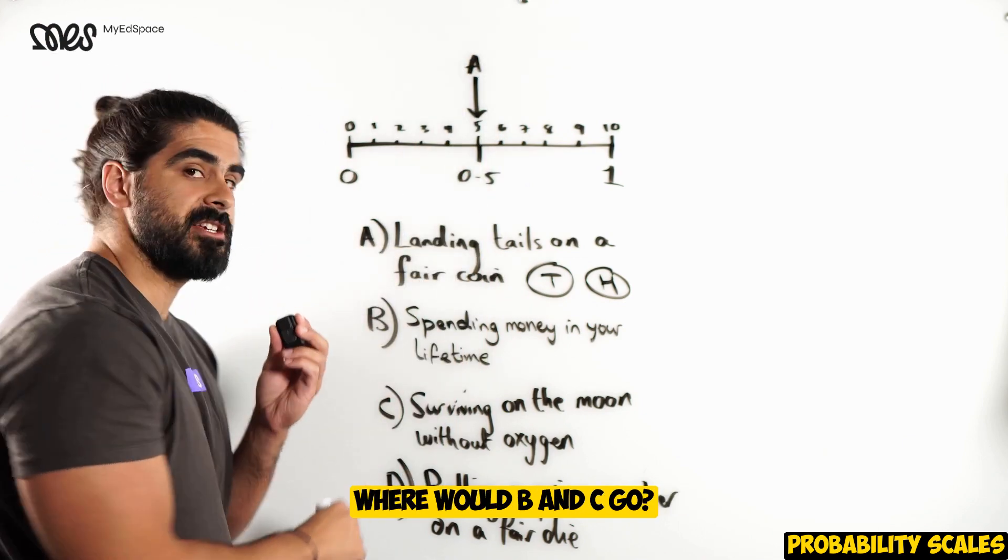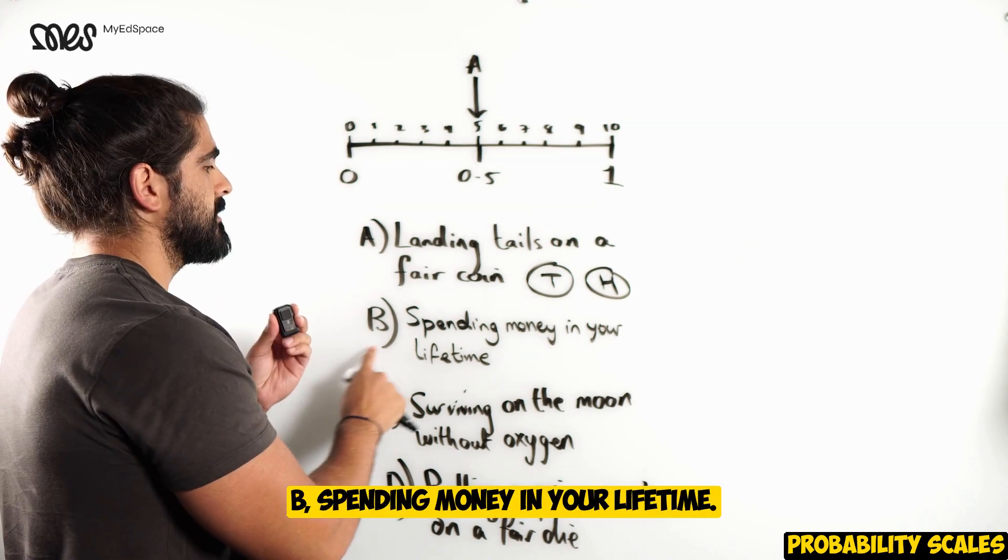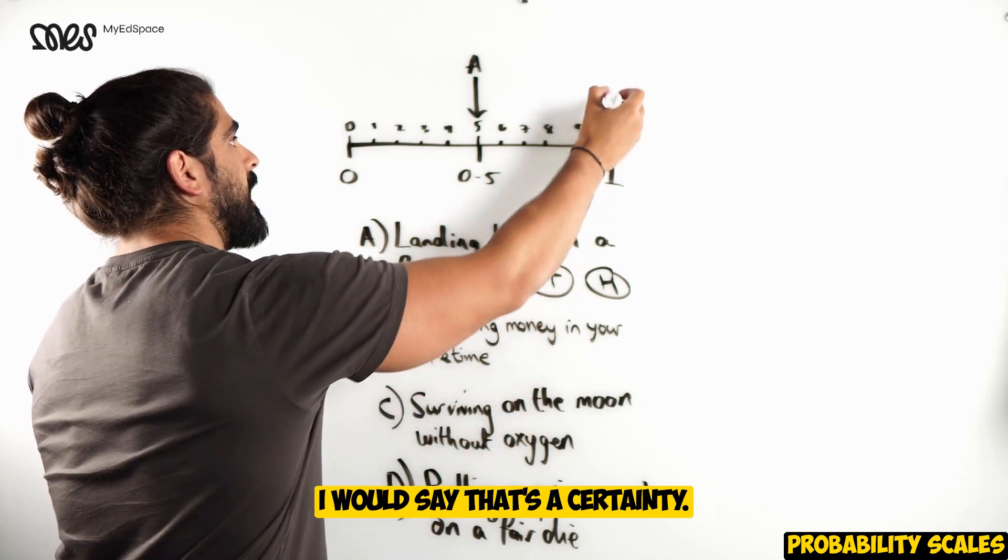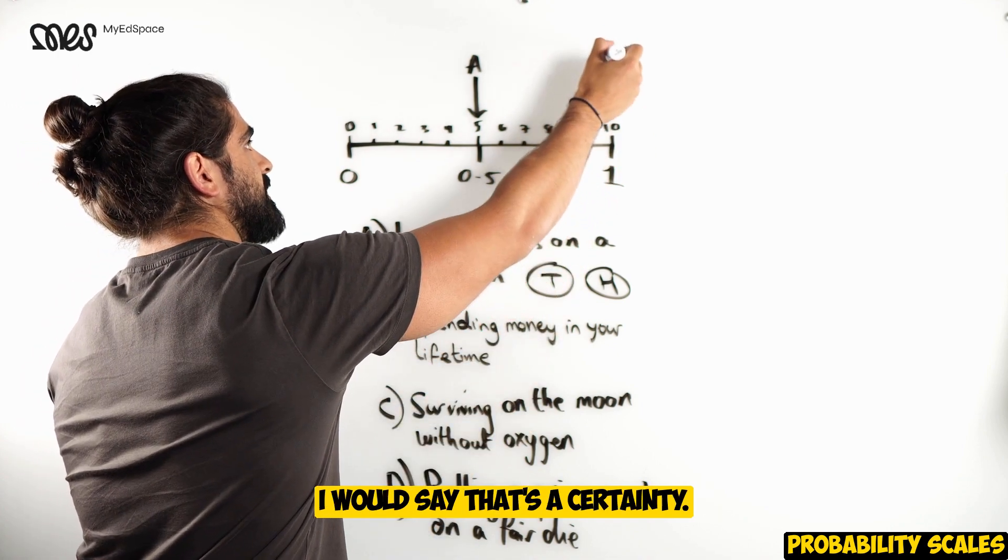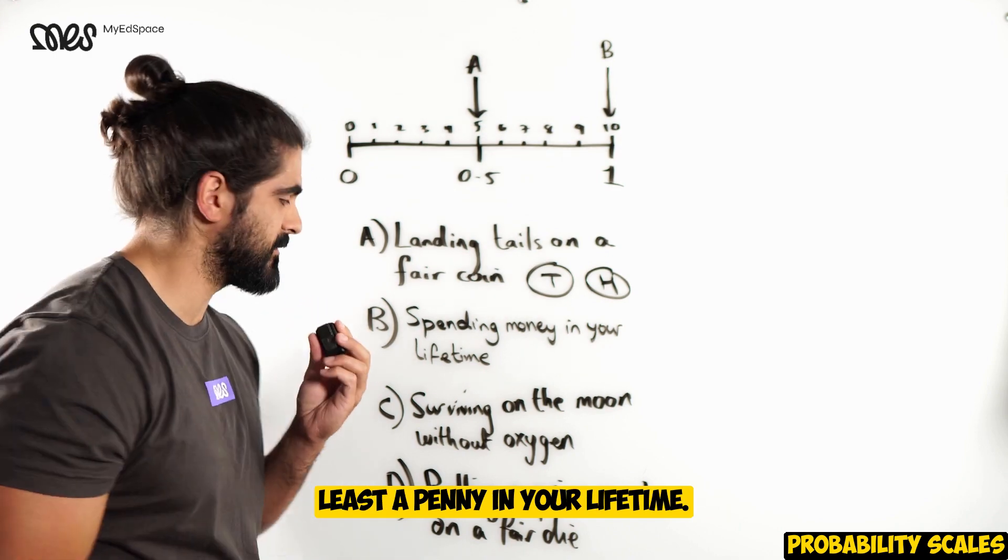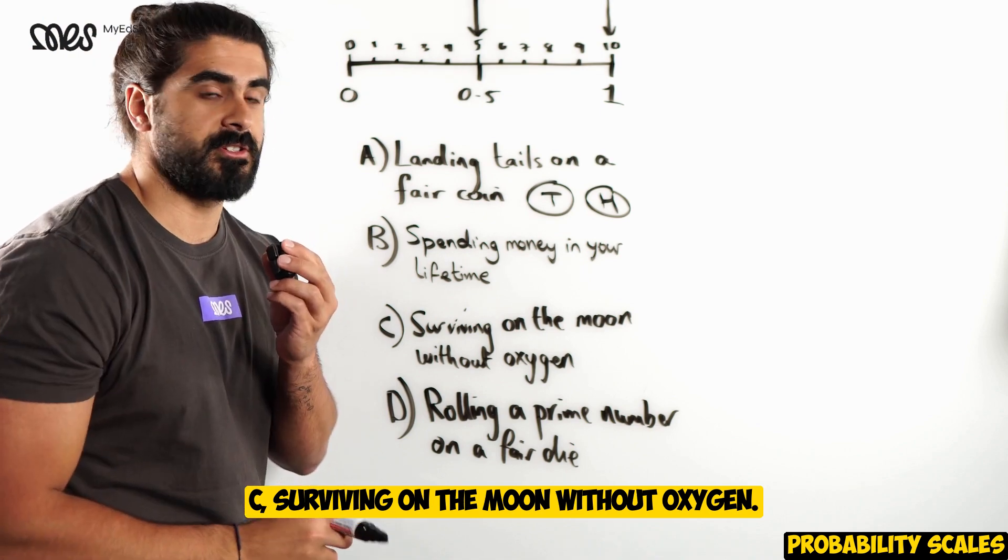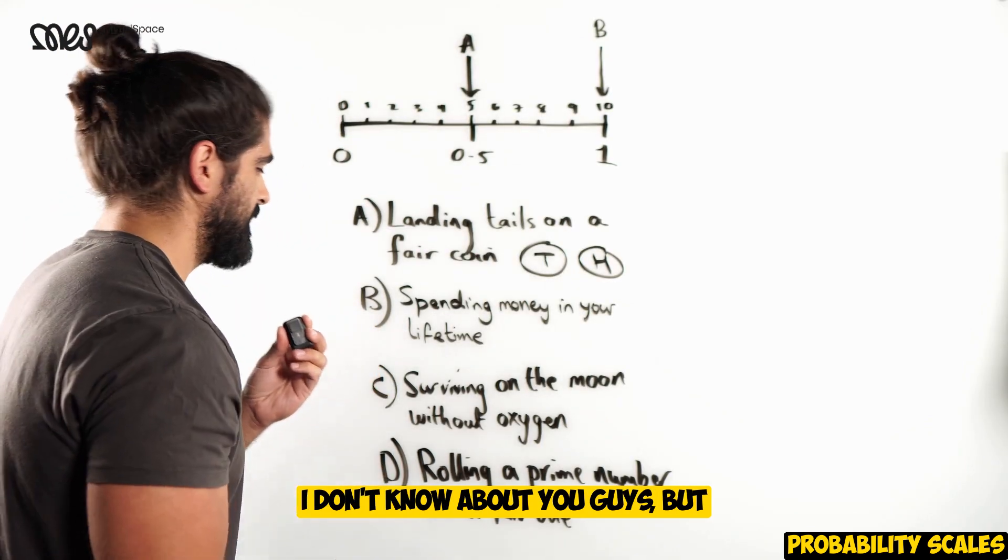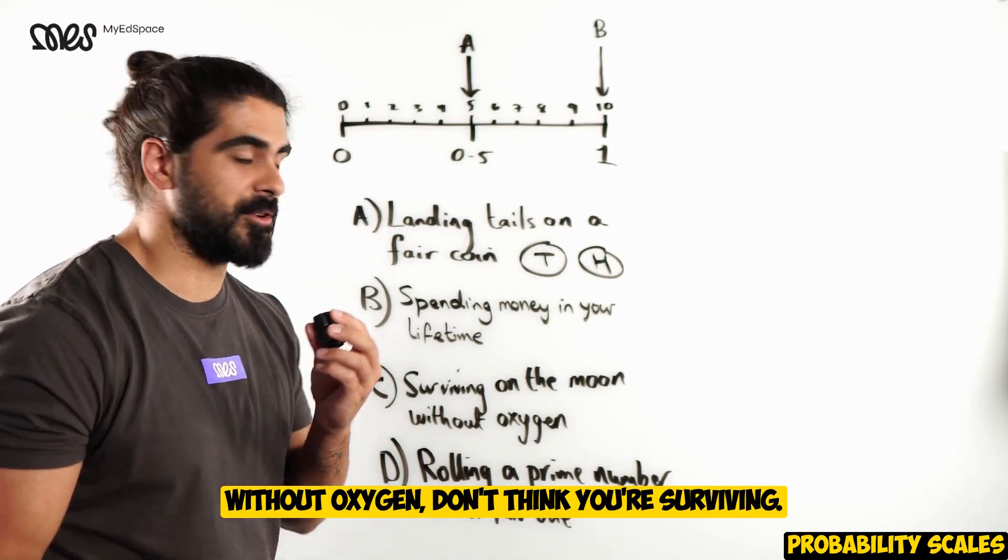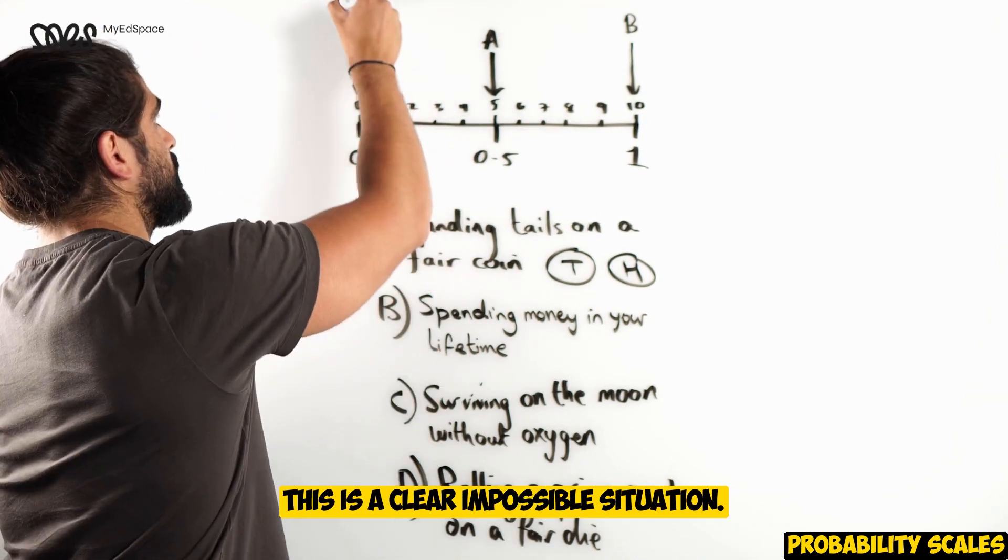Where would B and C go? B, spending money in your lifetime. I would say that's a certainty. You're definitely going to spend at least a penny in your lifetime. C, surviving on the moon without oxygen. I don't know about you guys, but without oxygen, don't think you're surviving. This is a clear, impossible situation.